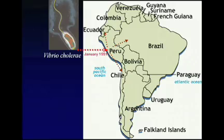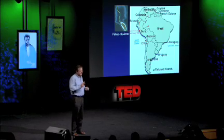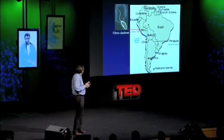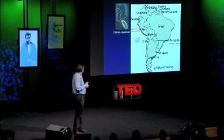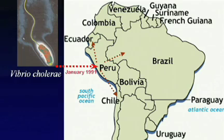Did the organism evolve to mildness in Chile, which has some of the most well-protected water supplies in Latin America? And did it evolve to be more harmful in Ecuador, which has some of the least well-protected? Peru falls somewhere in between. With funding from the Ewald-Krueger Foundation, I obtained many strains from these different countries and measured their toxin production in the lab.